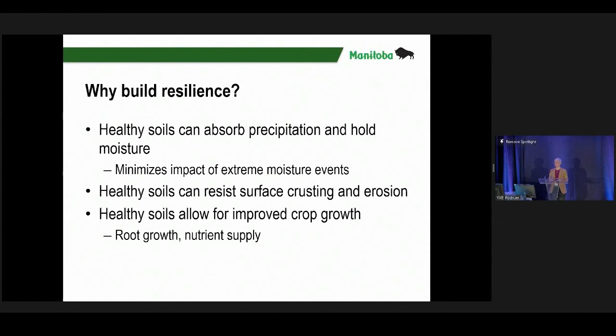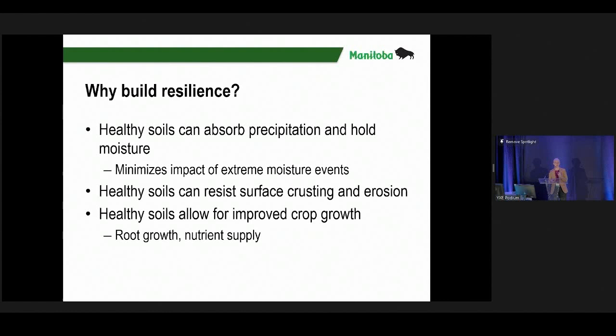Healthy soils can help absorb precipitation and hold moisture. We can resist surface crusting and erosion — we have lots of problems occasionally in Manitoba with surface crusting and soil erosion, and sometimes that erosion looks different than what we expect. Healthy soils are going to help improve overall crop growth. But we can talk all day about how to define healthy soil — ultimately, for the farmer, it comes down to what you want as a resilient soil and what you're looking for in health.